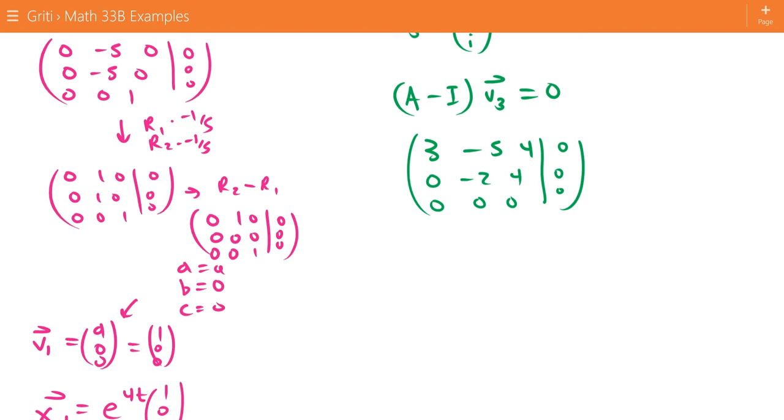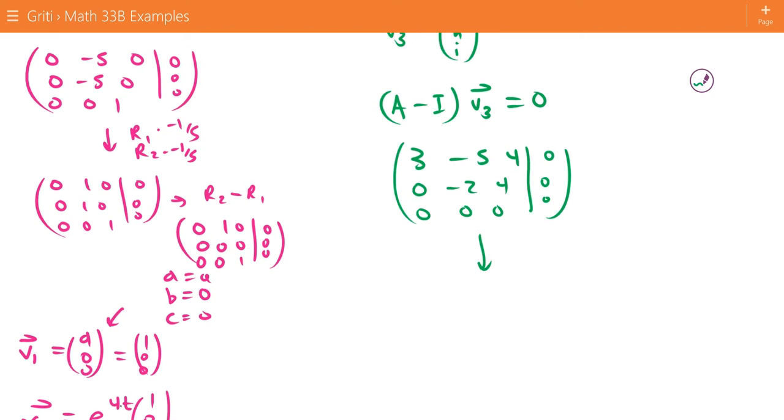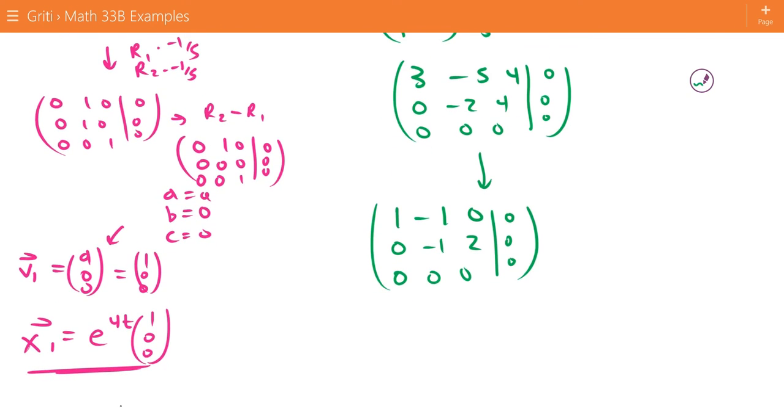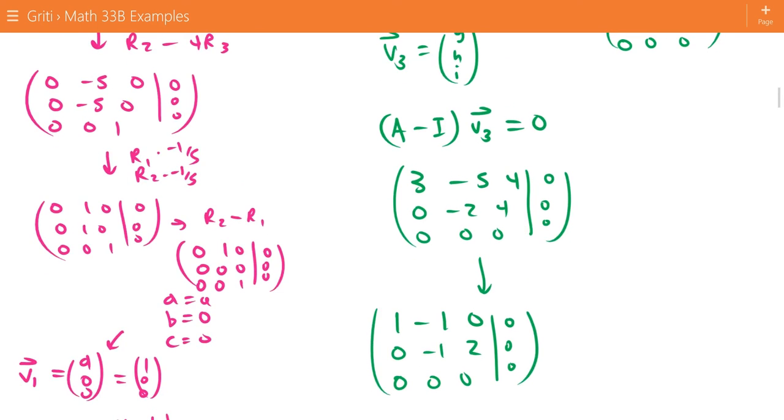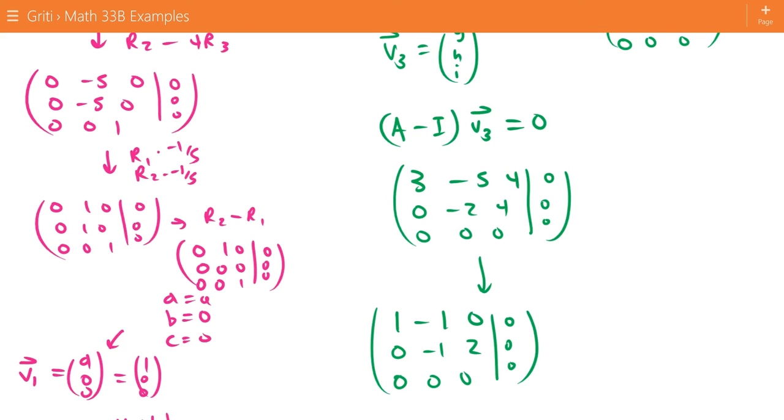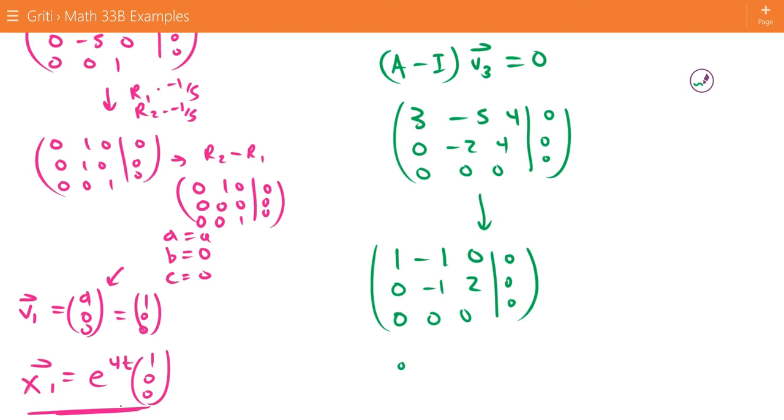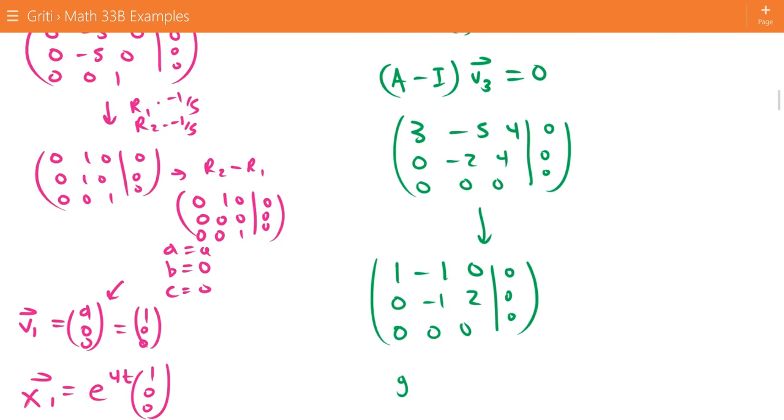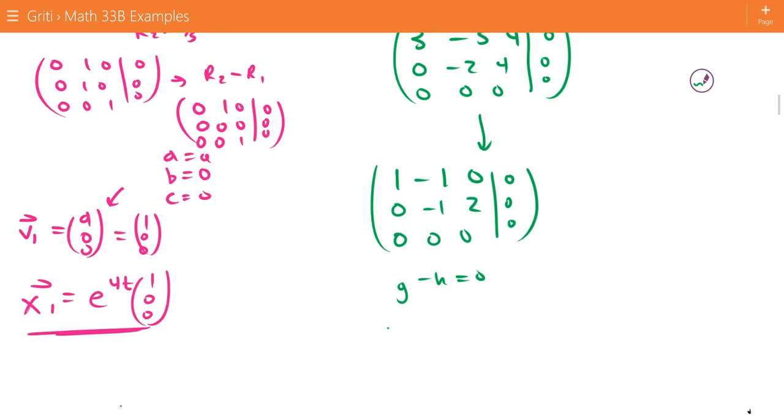When you row reduce this, I don't think I fully row reduced it, but this gives us 1, negative 1, 0, 0, 0, 0, 0, 0, and 0, 0, 0, all equaling 0, 0, 0. So that tells us that G minus H equals 0, and then negative H plus 2I equals 0. And I is not the imaginary number here, it's just what I'm calling the component.